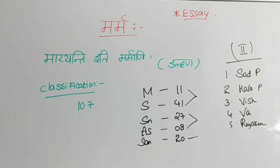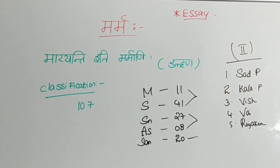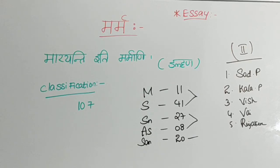Vaikalyakara Marma is that which causes a disability. It may not cause death, but it causes disability. Rujakara Marma is that which causes severe pain. As you all know, Ruja means pain, so Rujakara Marma is the one which causes severe pain. This is the second type of classification based on effect of injury: Sadya Pranahara, Kalanthara Pranahara, Vishalyagna, Vaikalyakara, and Rujakara Marma.